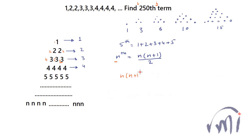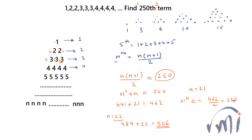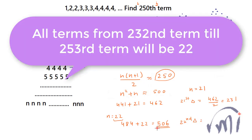Let me assume n(n+1)/2 is approximately equal to 250, so n² + n is approximately equal to 500. If I substitute n = 21, n² + n = 441 + 21 = 462. If n = 22, n² + n = 484 + 22 = 506. So the 21st triangular number is 462/2 = 231, and the 22nd triangular number is 506/2 = 253. So 250 lies between the 21st and 22nd triangular numbers.